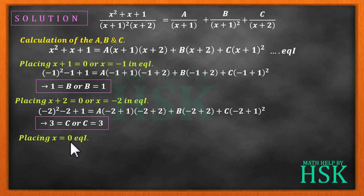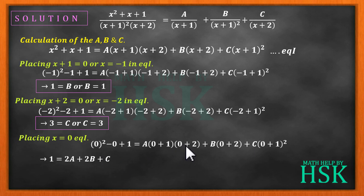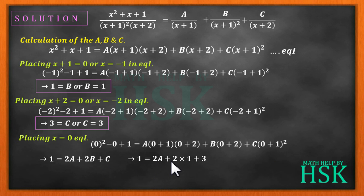Now to find A, place x = 0 in equation 1 using the known values of B and C: 0 + 0 + 1 = A·(1)·(2) + B·(2) + C·(1)². This gives 1 = 2A + 2B + C. Substituting B = 1 and C = 3: 1 = 2A + 2 + 3, so 2A = 1 - 5 = -4, giving A = -2.